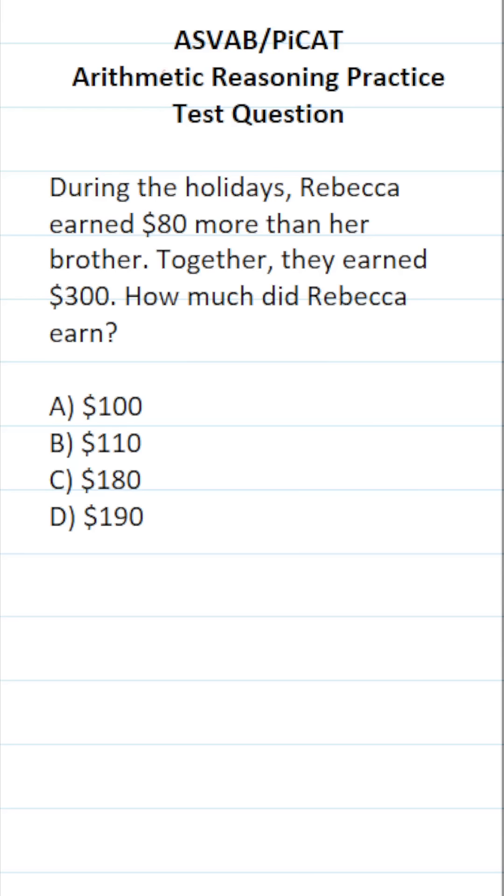This arithmetic reasoning practice test question for the ASVAB and PiCAT says, during the holidays, Rebecca earned $80 more than her brother. Together, they earned $300. How much did Rebecca earn?